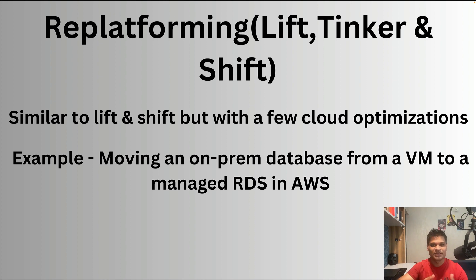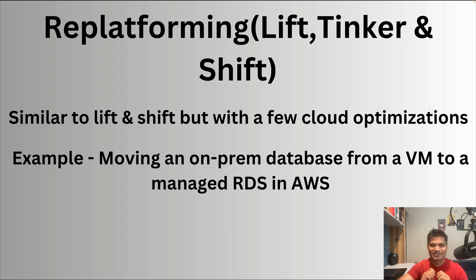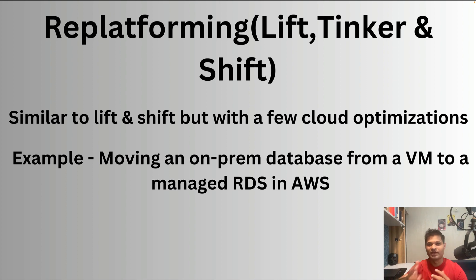Similarly, you might move an application to Elastic Beanstalk instead of deploying it on a virtual machine. These are small tinkering changes — not major architectural overhauls, just tidbit modifications here and there. This is also one of the quickest ways to move to cloud and it gives you performance improvements while letting you use a few cloud-native services.